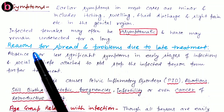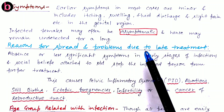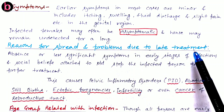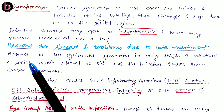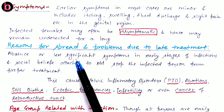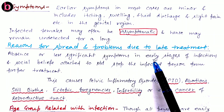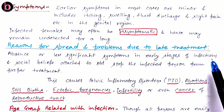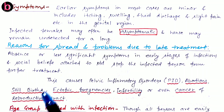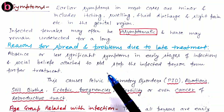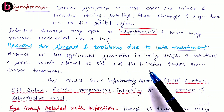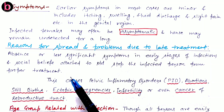What are the reasons for the spread and problems related to late treatment? The absence or less significant symptoms in early stages of infection, along with social stigma related to STDs, stops the infected person from seeking proper treatment.